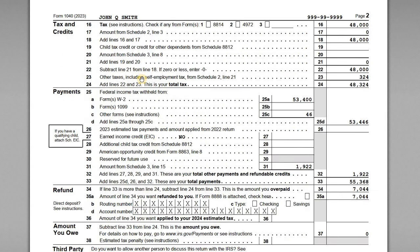That covers it for this tutorial. As you can see, if you've got multiple jobs during the year, you potentially have to contend with these extra Medicare taxes and maybe some over-withheld Social Security. Hope that was helpful, and I look forward to seeing you on the next one. Thanks.